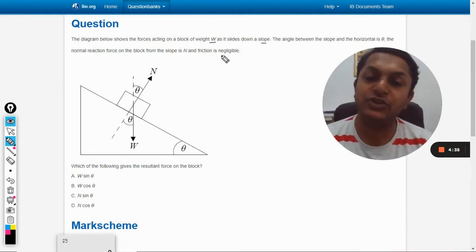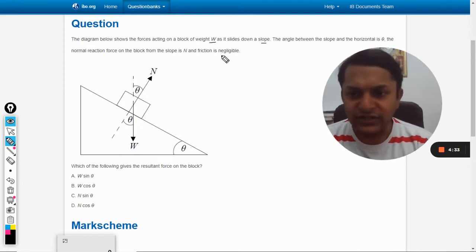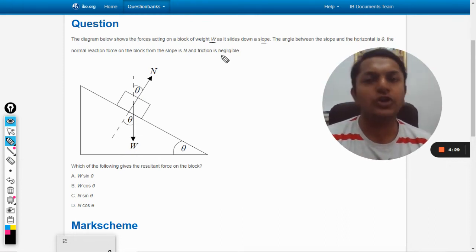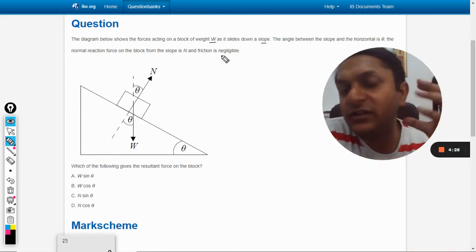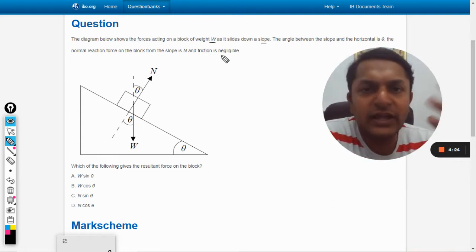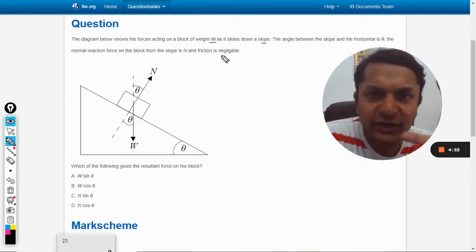Okay, so all the forces have been shown in the diagram. So what is the question? Which of the following gives the resultant force on the block? So we need to find the resultant force, like what is the final force that is acting on the block.